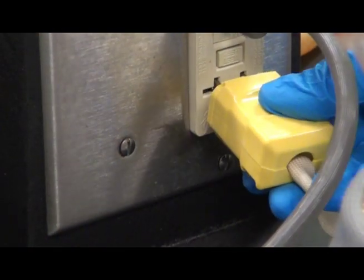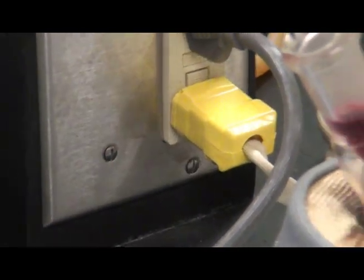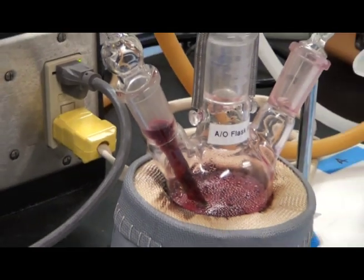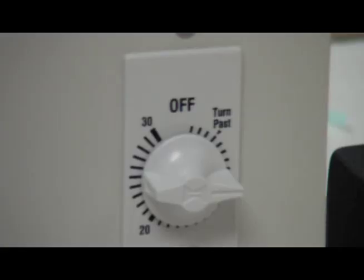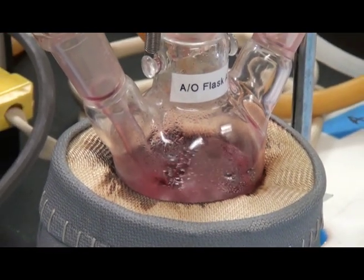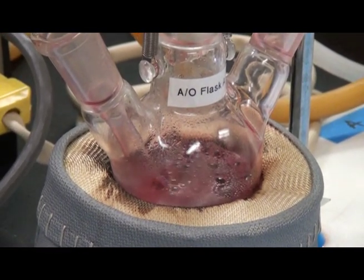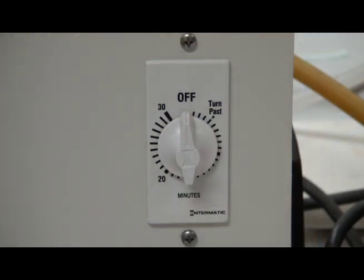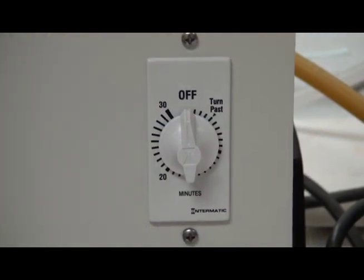Apply power to the heating mantle. When the solution starts to boil, turn on the vacuum pump and set the timer to 15 minutes. Aspirate for 15 minutes at a 1 liter per minute flow rate. The dial timer will turn off the vacuum after 15 minutes.